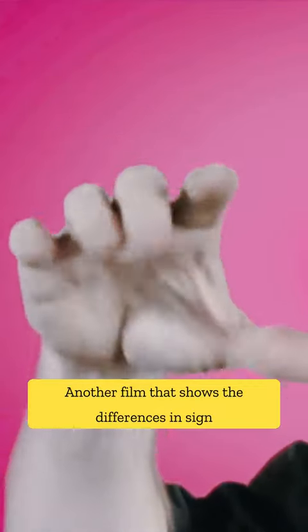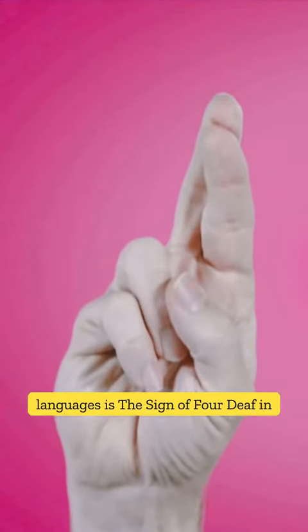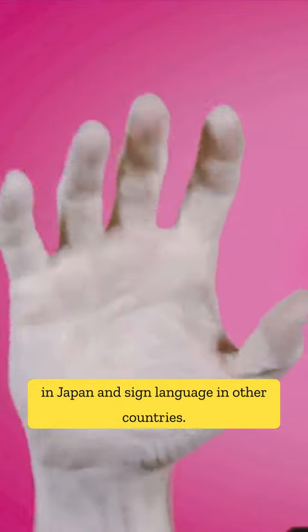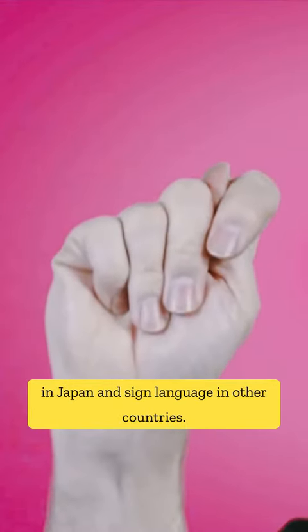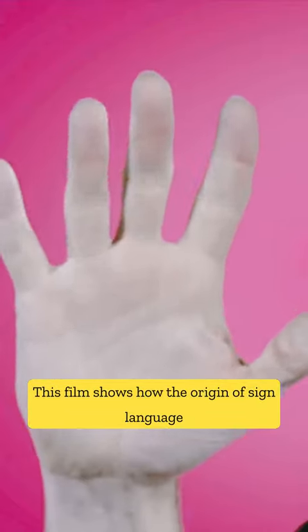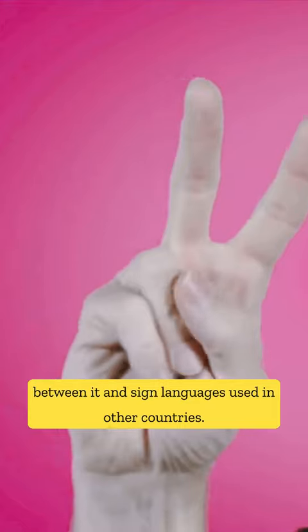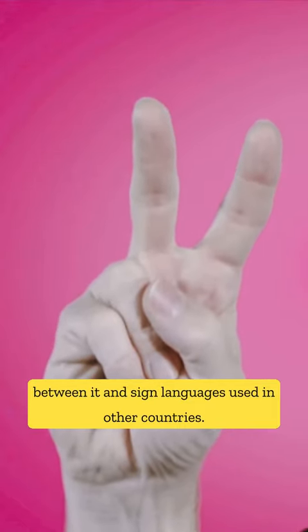Another film that shows the differences in sign languages is The Sign of Four, Deaf in Japan, which depicts the differences between sign language in Japan and sign language in other countries. This film shows how the origin of sign language in Japan is different and how many differences exist between it and sign languages used in other countries.